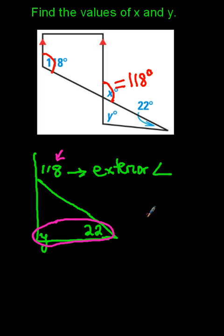Now in geometry we can say that the exterior angle 118 degrees is equal to the sum of the two non-adjacent angles, which means 118 is going to be Y plus 22. 118 is going to be equal to the sum of Y and 22.